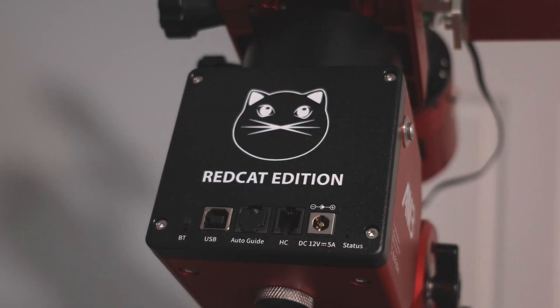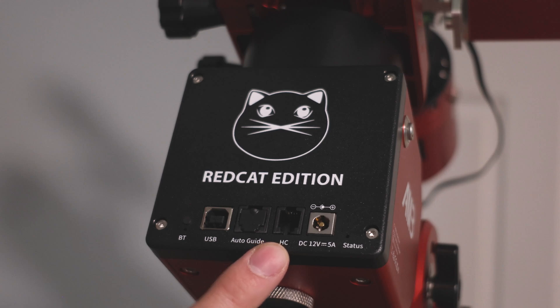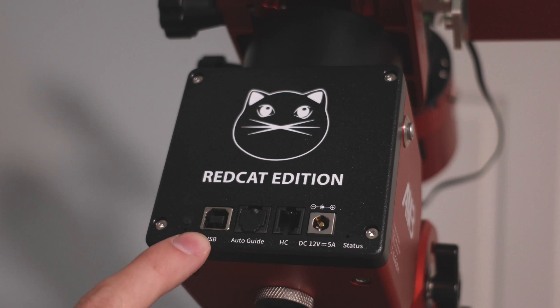Now here's just some quick notes on the AM3 as I wrap up the review here. The front panel here, obviously this is where you power the mount. You have a hand controller port, as you saw when I performed the sound test. An auto guide port, this is ST4. You have a USB port for controlling the mount through like the ASIAIR. This is USB type B, and it can also be used with Bluetooth as well, which is a pretty cool feature on the AM3.